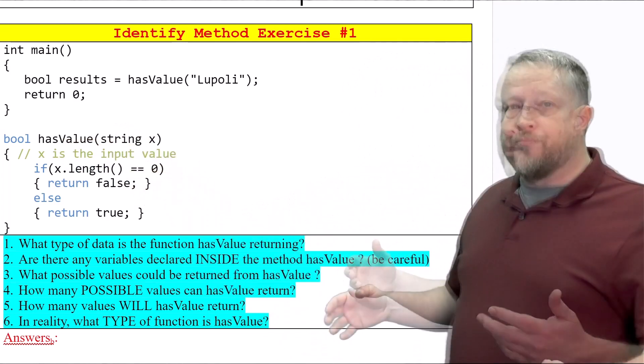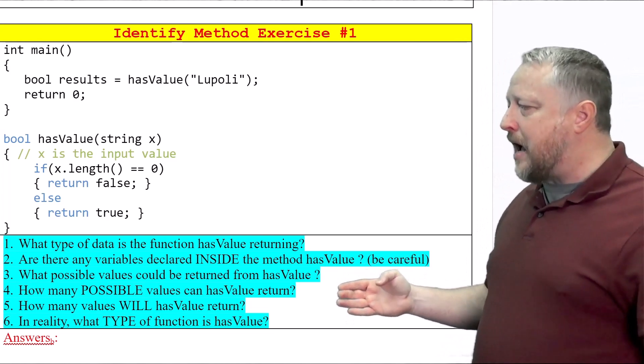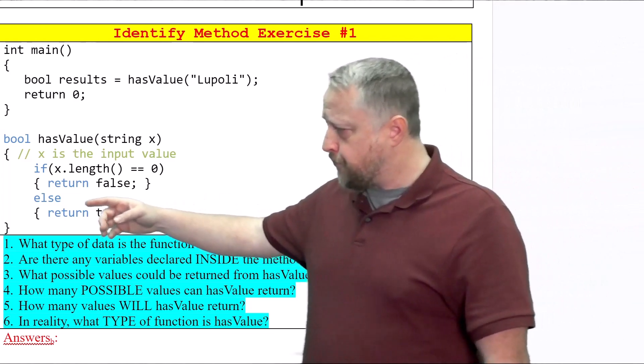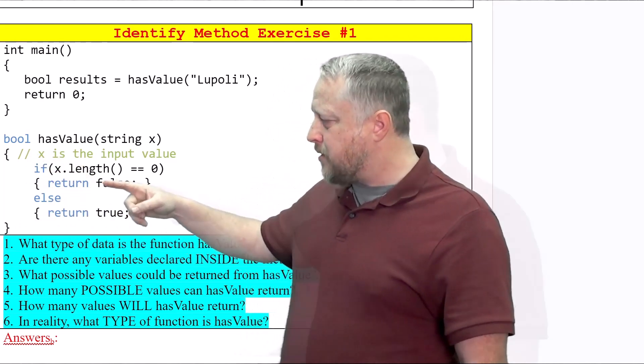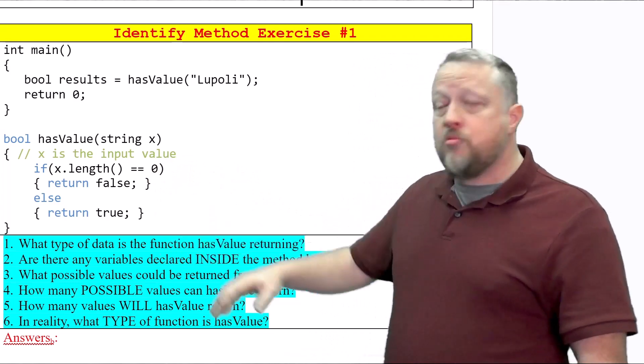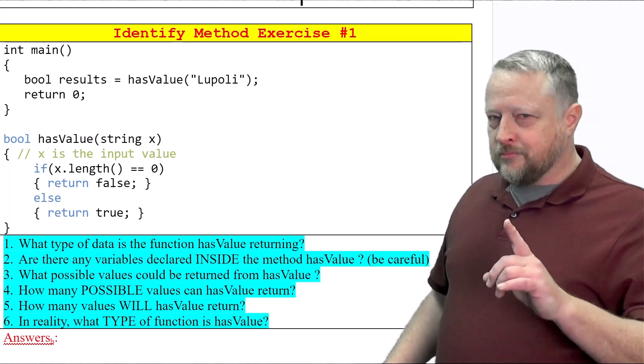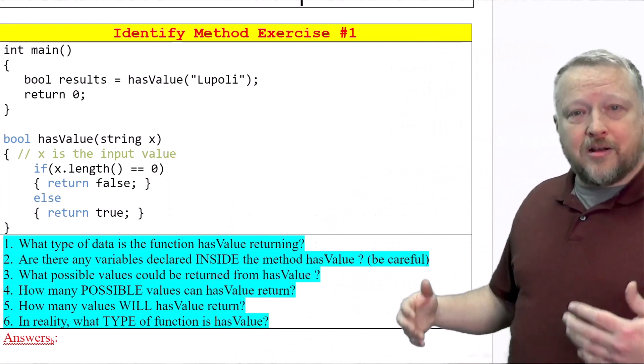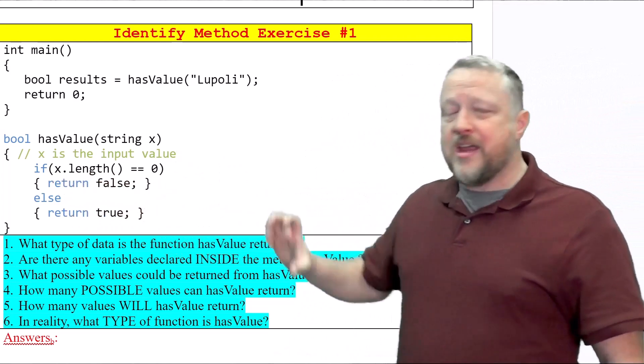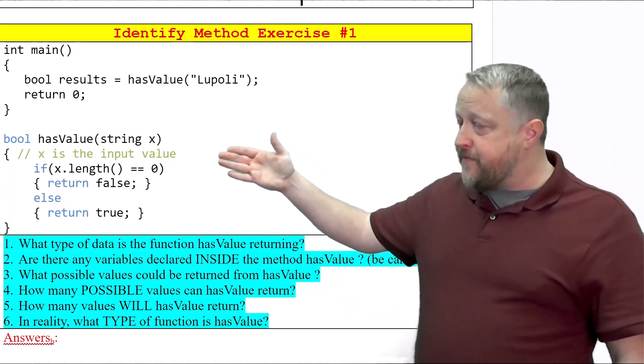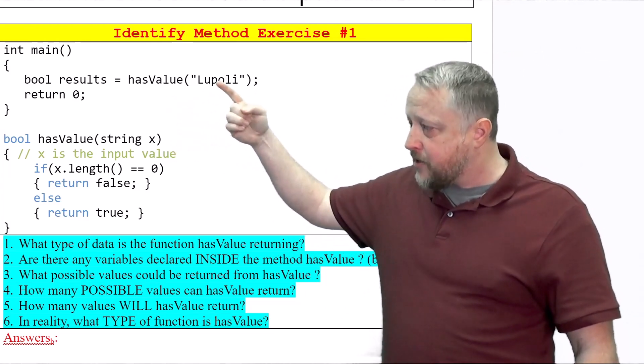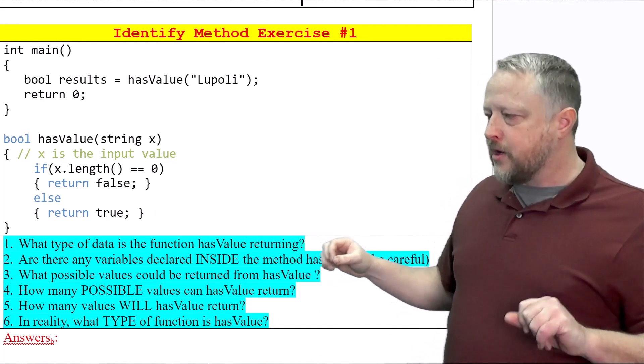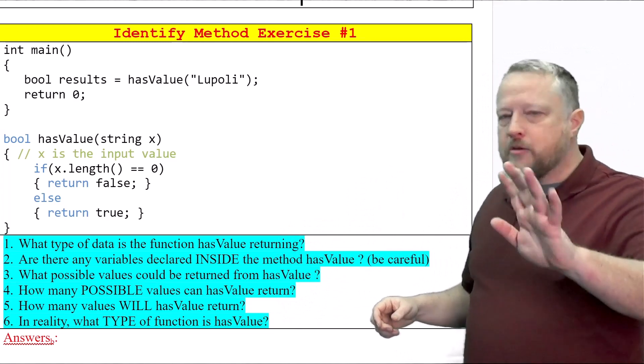Number two: are there any variables declared inside the method hasValue? That's why I said be careful, because there's a curveball. A lot of you, understandably, are looking at the squiggly braces—there's nothing exactly being set, that's a comparison. So no variables declared inside the function? Just for your heads up, string x actually is a variable that is being declared inside of that function. Notice I'm able to use x within that particular function. There is a value of x—it's loopoli in this case—that's going to be transferred into string, and then we're going to use that for the rest of that function.